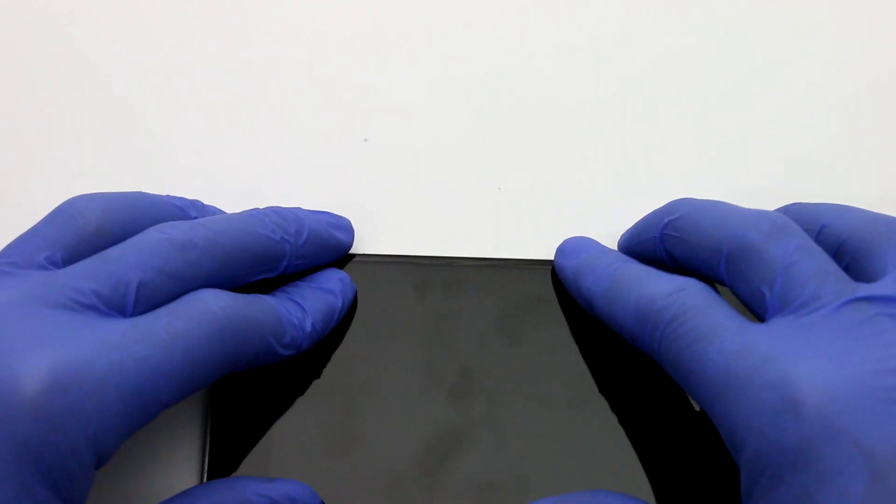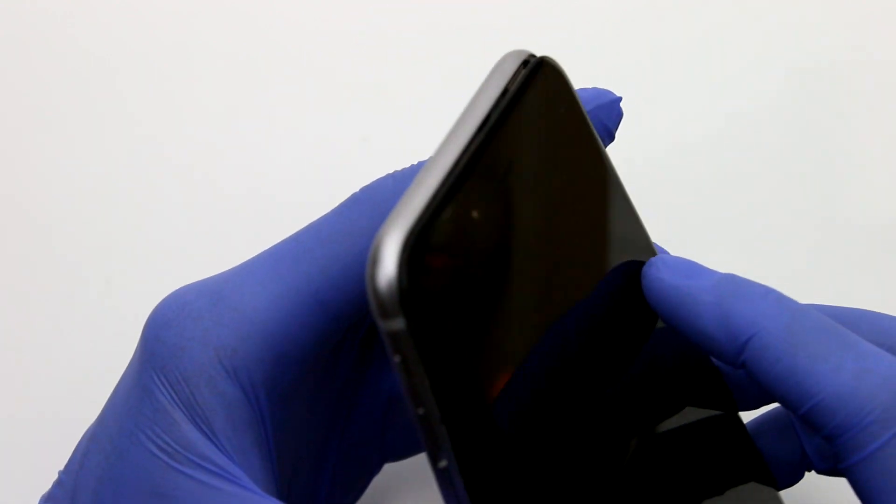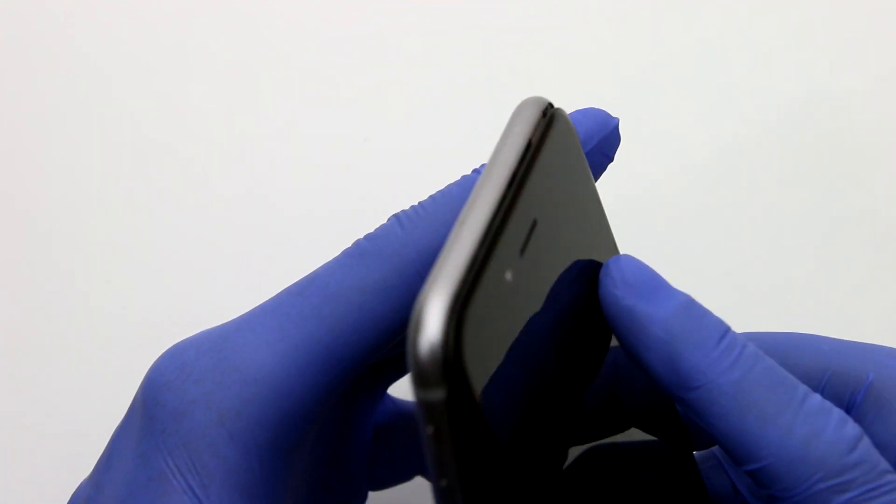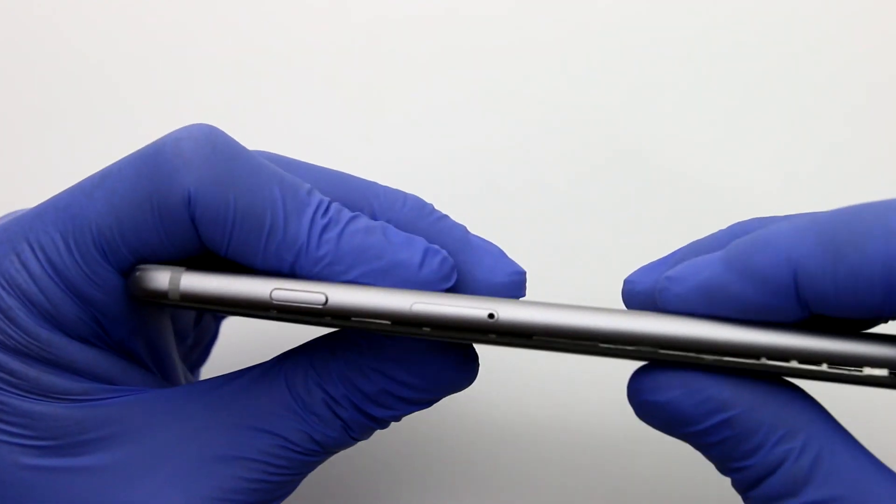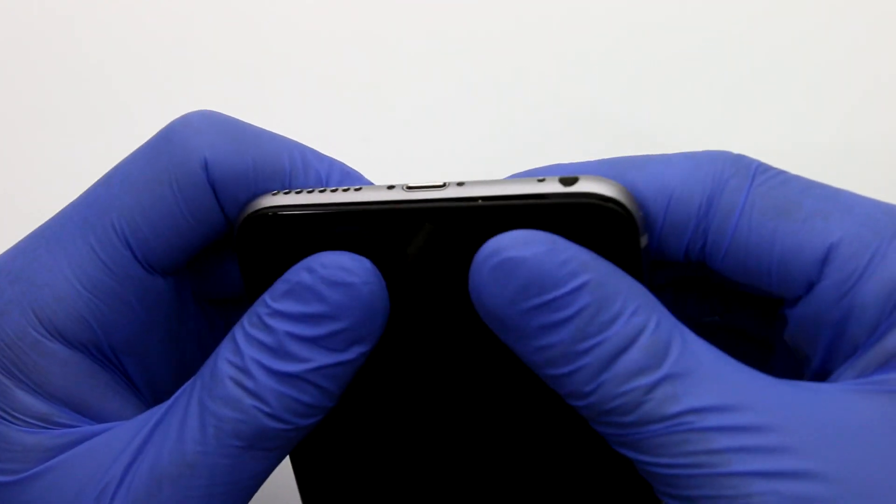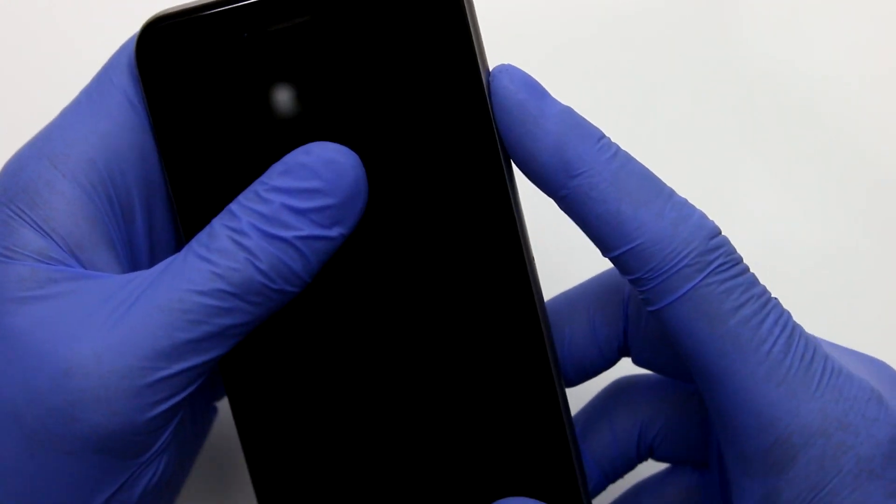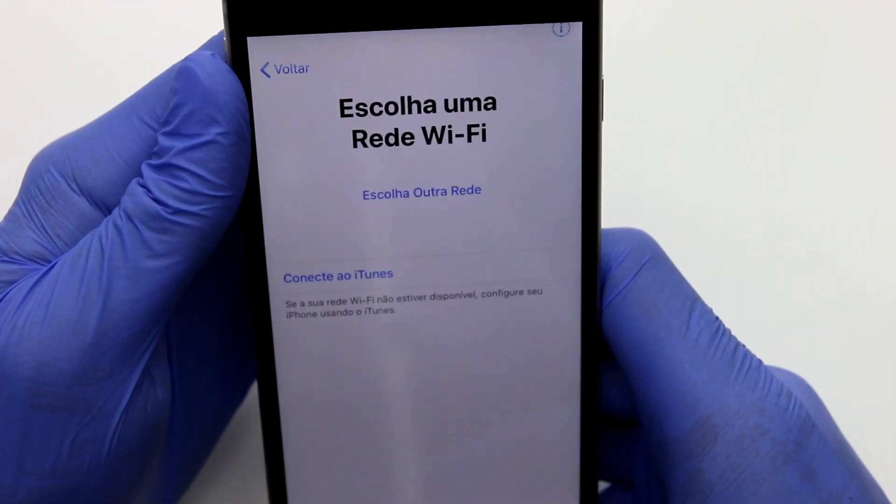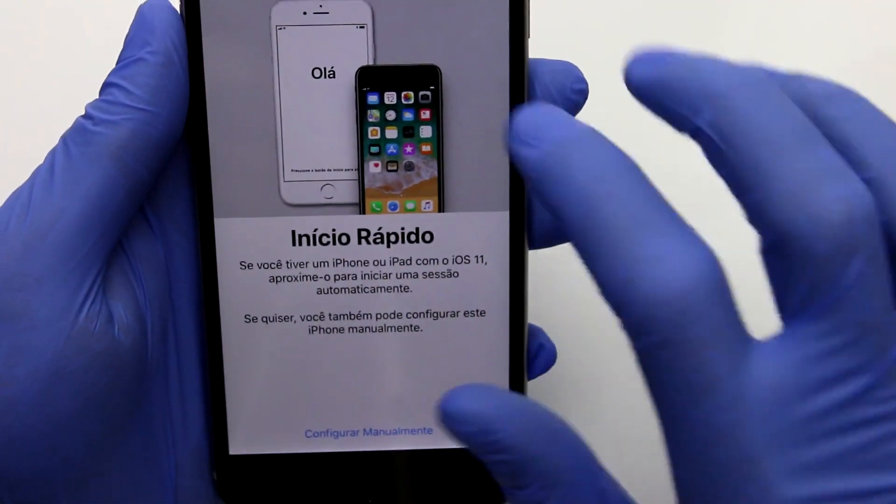Now once you're done with all the screws, simply bring down the screen from that 90 degree angle you were holding it at the entire time and use those latches to secure them underneath the bend of the upper portion of the back cover and then slowly close it from top to bottom. So from the top of the screen towards the bottom of the screen, you slowly press it down and of course the buttons work and now the screen also works.